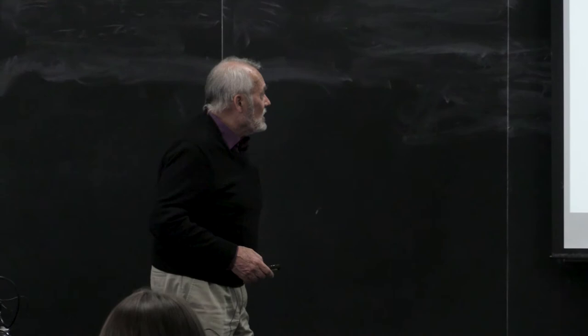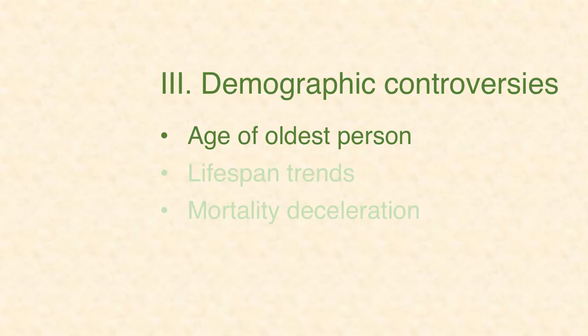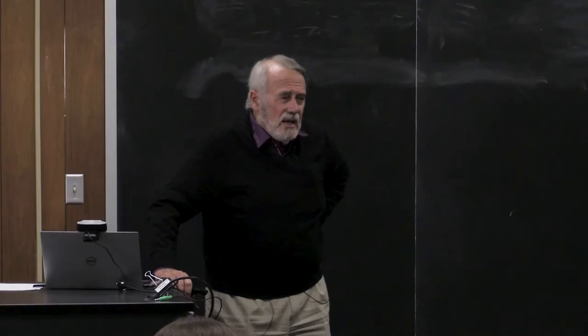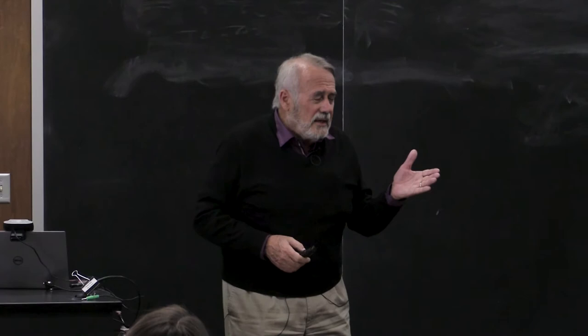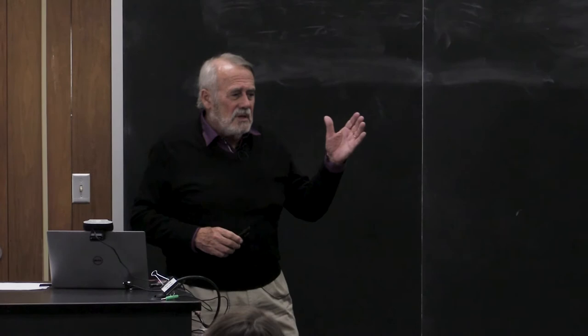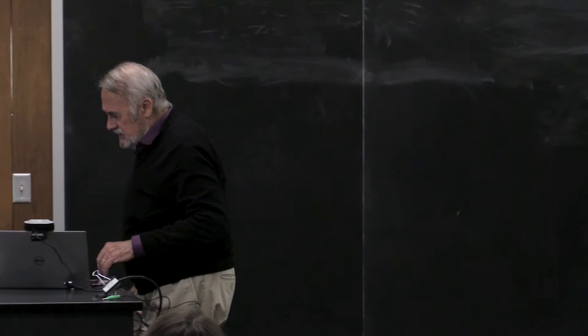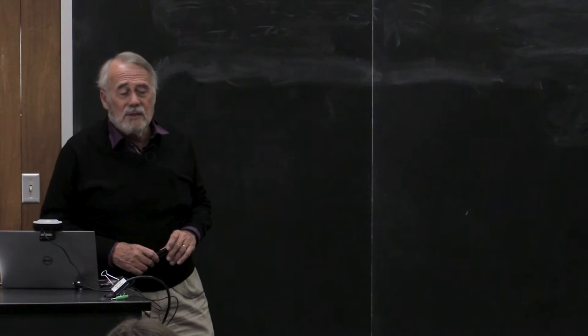Now for the controversies. The biggest is the age of the oldest person ever — Madame Calment at 122 years and 164 days, who died in 1997. Jim Vaupel, Bernard Jeune in Denmark, and Jean-Marie Robine — a French demographer — all thoroughly vetted this and declared it legitimate.